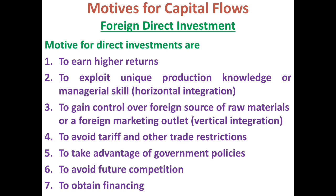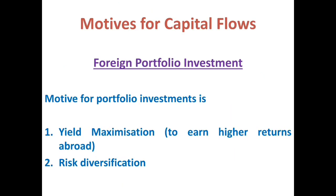Shifting our focus to portfolio investment, there are only two motives. The first is yield maximization — the basic motive is to earn interest or returns abroad, as individual and institutional firms want to earn more and more interest internationally. The second motive is risk diversification — they want to hold different kinds of assets such as debentures and bonds in different countries, so as to reduce and eliminate potential risk exposure.